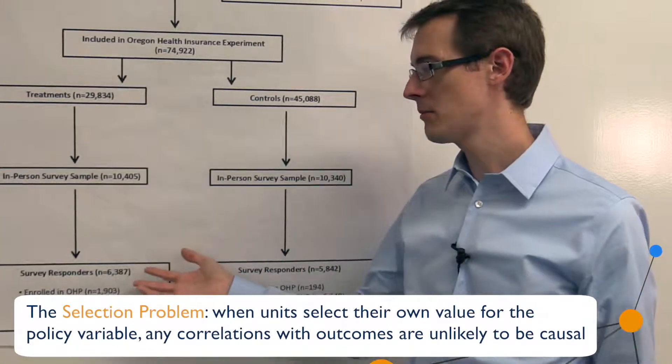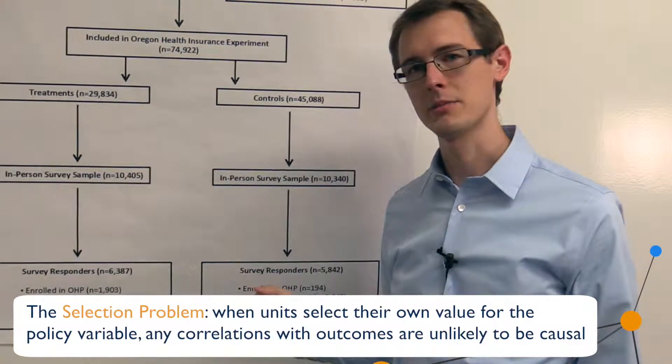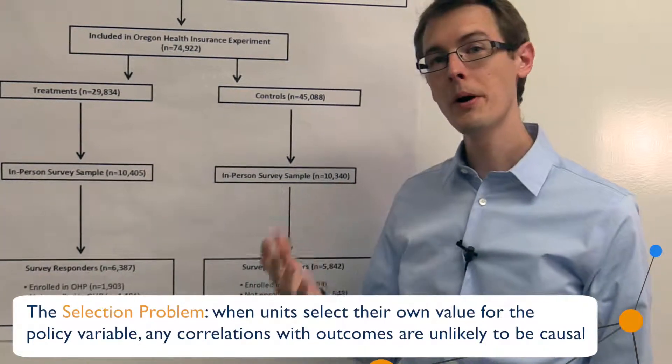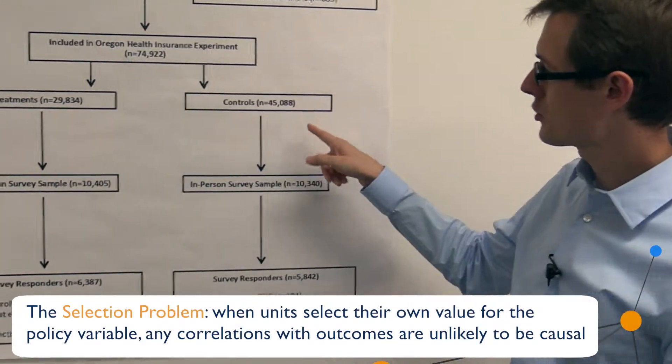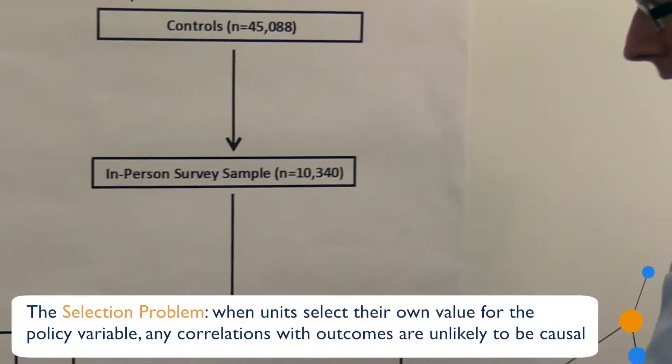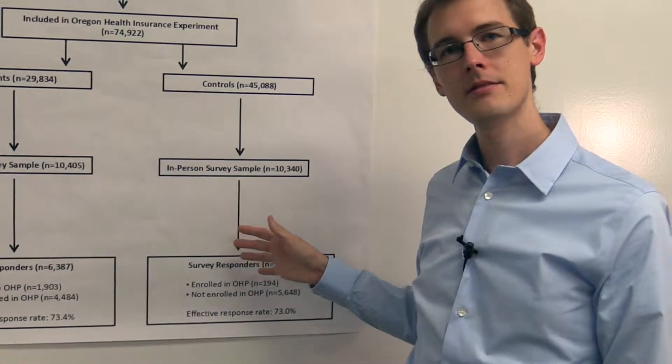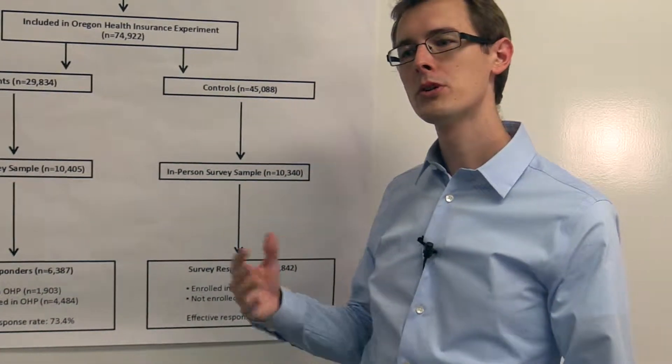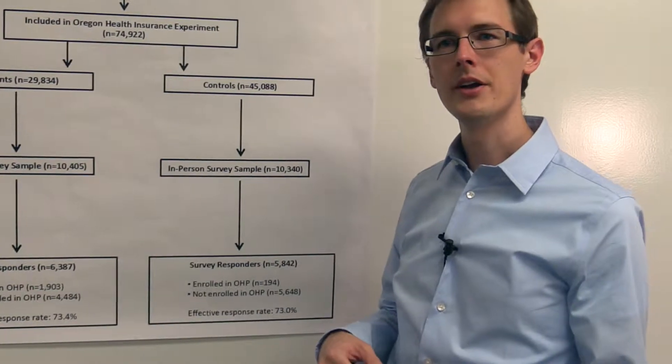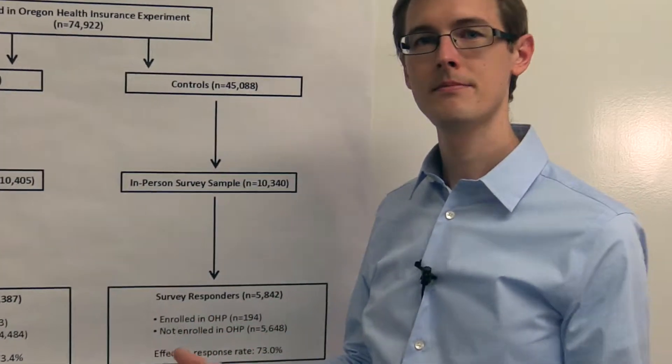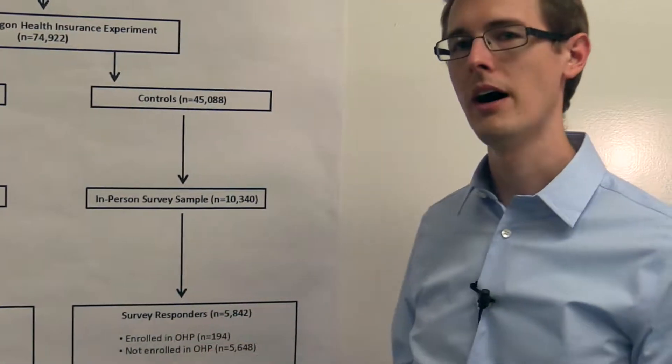So for example, let's think about the Oregon experiment. Well, suppose that people in the control group randomly decide whether to respond to the survey or not. Then people who respond and people who don't respond are the same, basically. There's nothing special about non-responders.